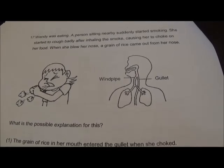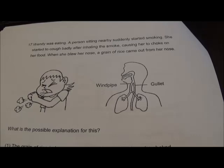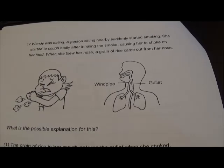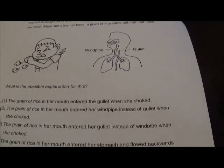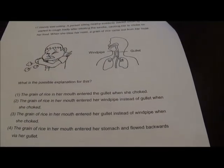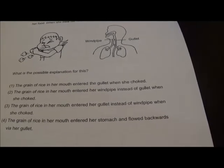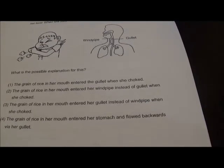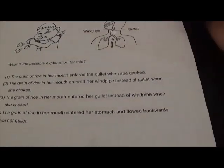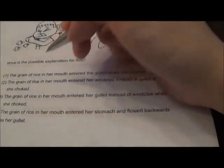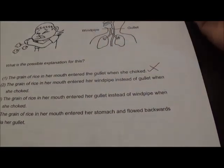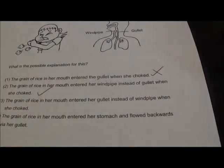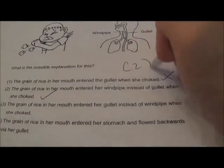Question 17: Wendy was eating when a nearby person started smoking. She coughed badly and choked on food. When she blew her nose, a grain of rice came out. When people choke while eating, the food goes into the windpipe instead of the gullet. The grain of rice entered her windpipe instead of the gullet. Question 17, your answer is 2.